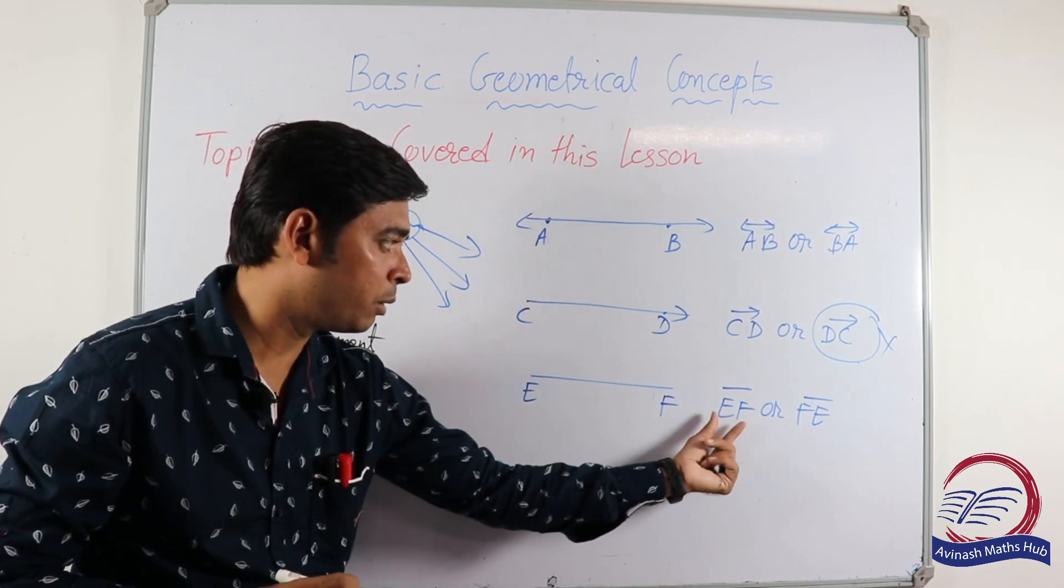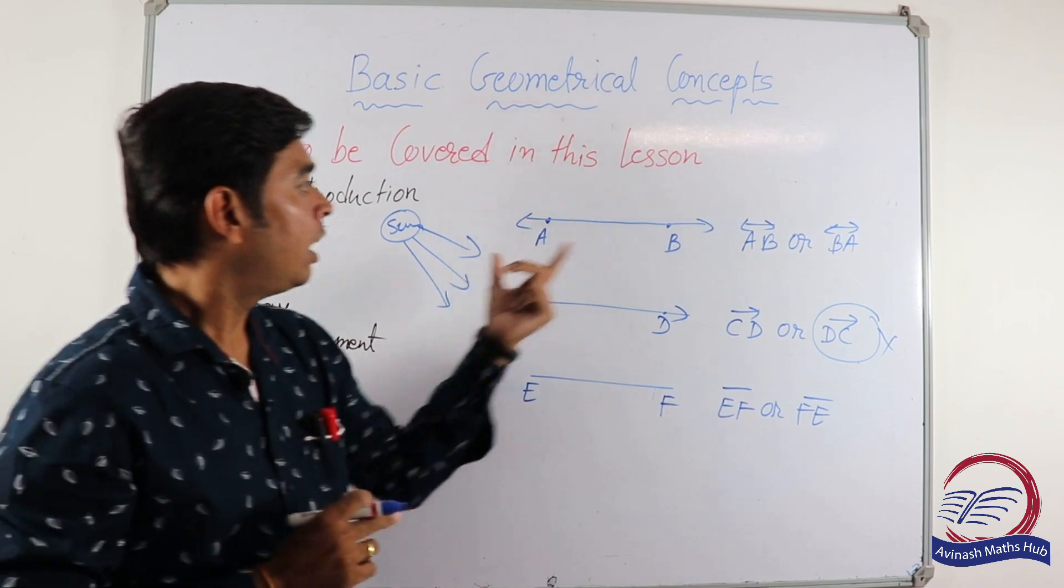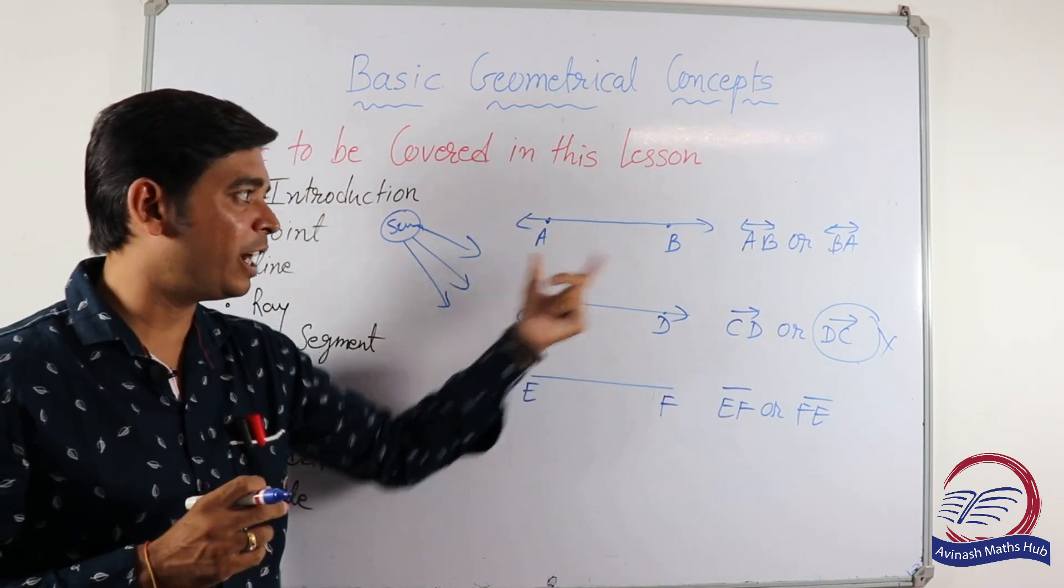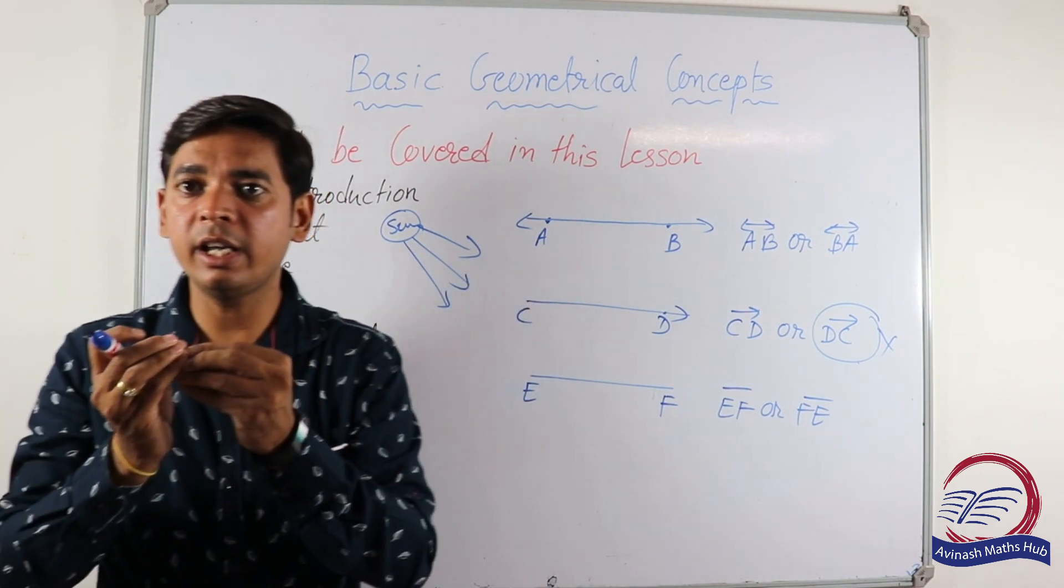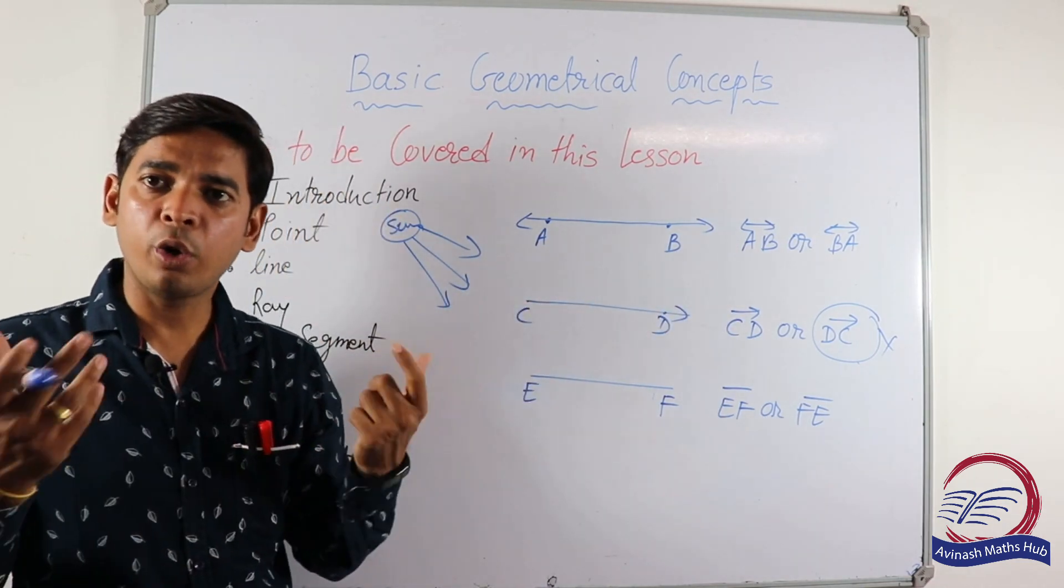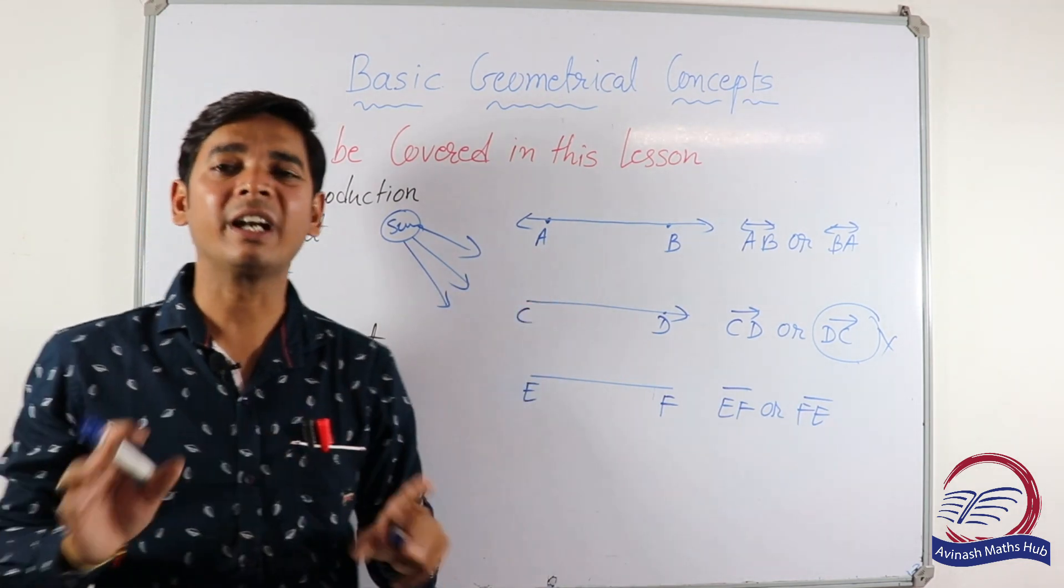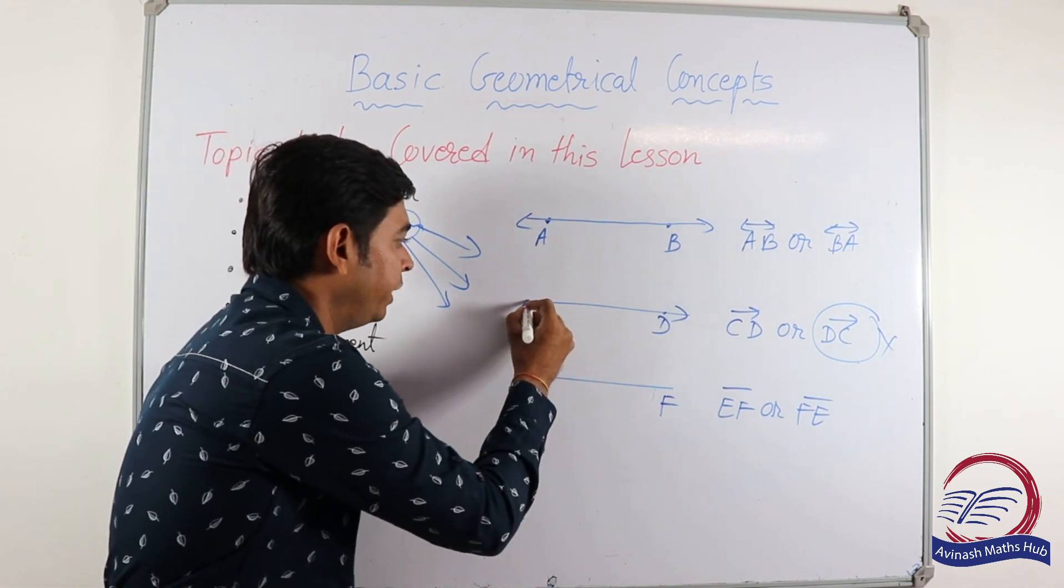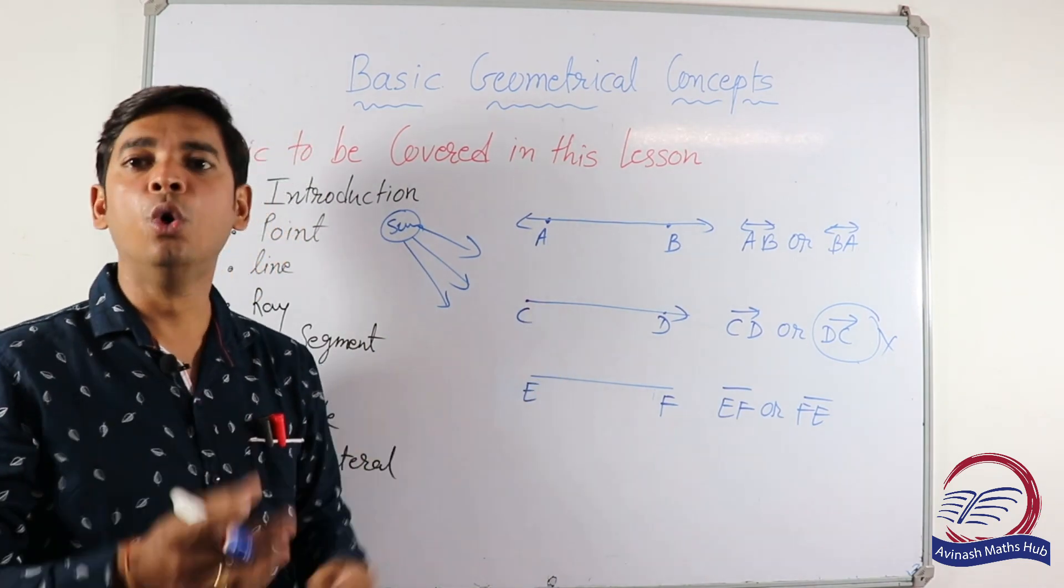Now line segment. Yes, line segment EF can also be written as FE. Now, how many endpoints does a line have? Looking at the definition, we can see it is infinitely going in both directions. So we cannot measure the line. Now here we see this is one endpoint. This is one endpoint of the ray. Can we measure the ray? No.